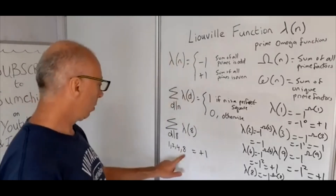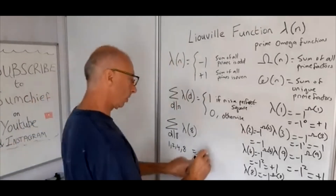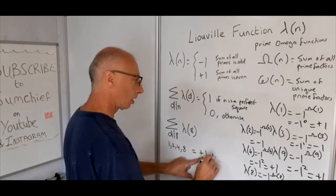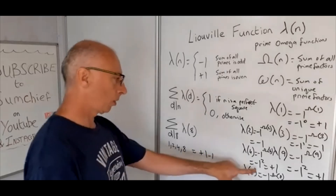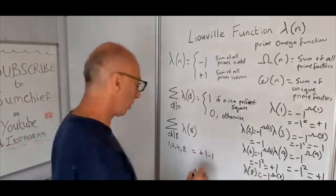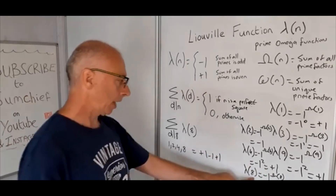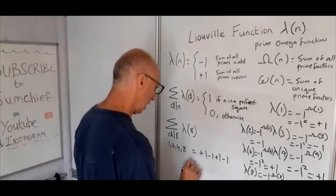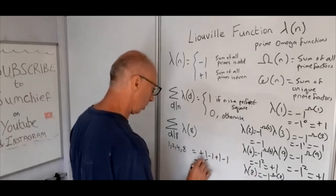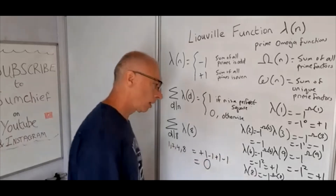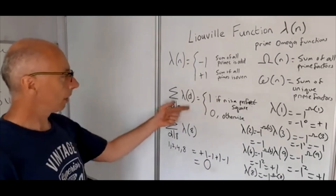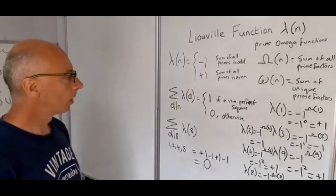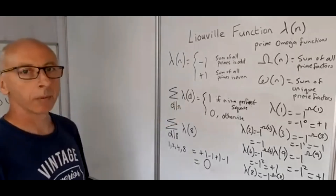So we have λ(1) = +1, λ(2) = -1, λ(4) = +1, and λ(8) = -1. Adding these together: +1 - 1 + 1 - 1 = 0. So that confirms the identity using the prime omega function: for 8, which is not a perfect square, the sum equals 0.